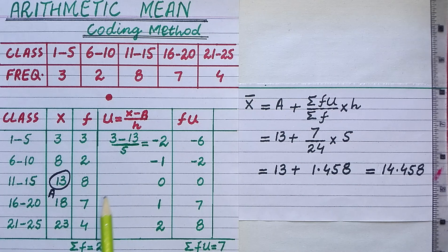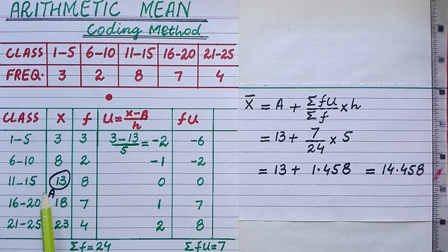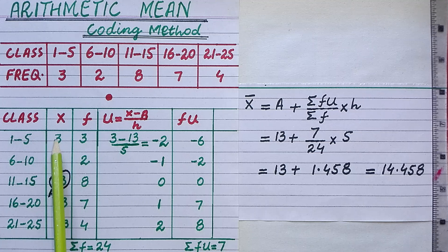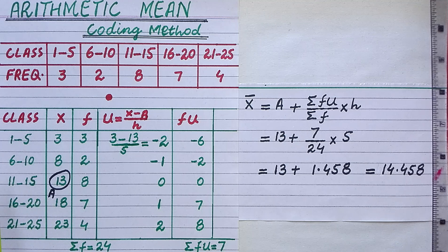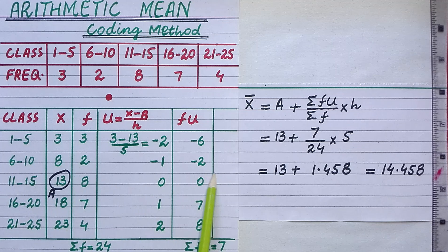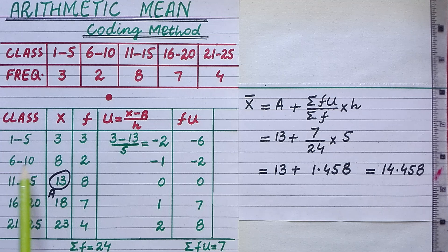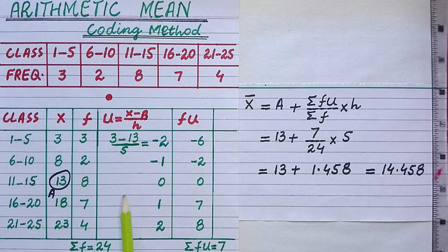Next, we add the column of coding variable u. To find the value of u for a class, take its class mark, subtract the assumed arithmetic mean, then divide by the class size. For the first class, class mark is 3; 3 minus 13 is minus 10, and minus 10 divided by class size 5 gives minus 2. For the second class, class mark is 8; 8 minus 13 is minus 5, divided by 5 gives minus 1, and so on.